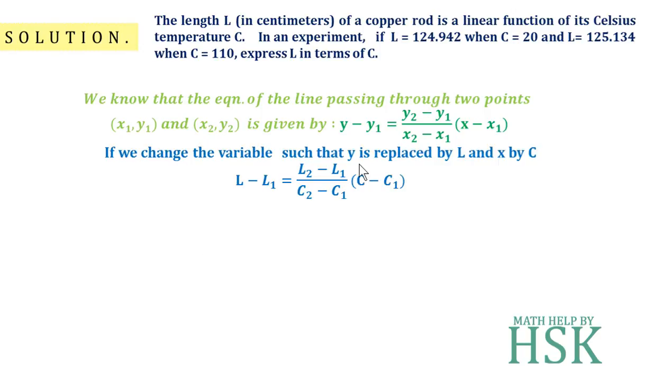If we change the variables such that y is replaced by L and x by C, then we can get the same equation as: L minus L₁ equals (L₂ minus L₁) over (C₂ minus C₁) times (C minus C₁). This equation will give us the linear relationship between L and C.